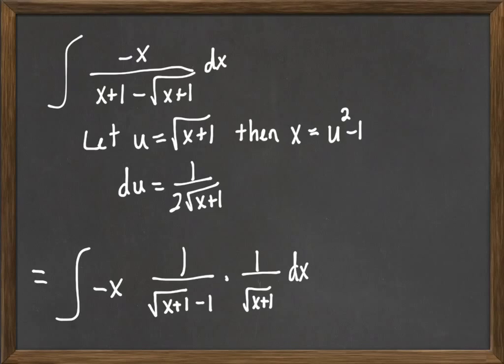So I can rewrite the bottom when I factor out that square root of x plus 1 as 1 over the square root of x plus 1 minus 1 times the square root of x plus 1 times dx.